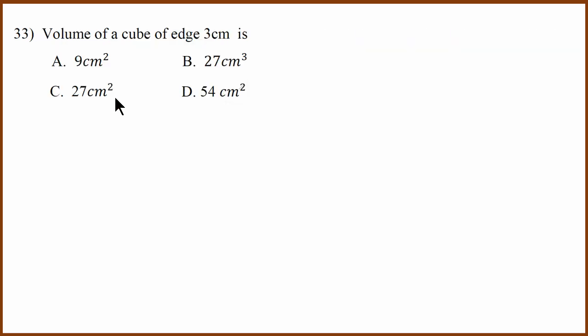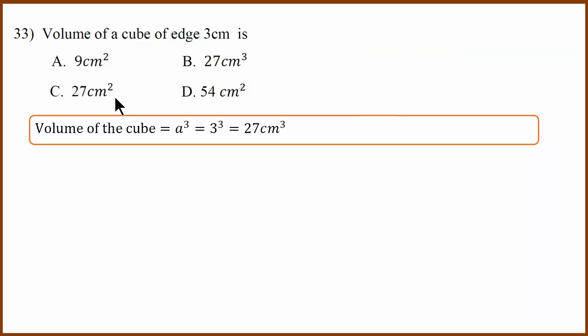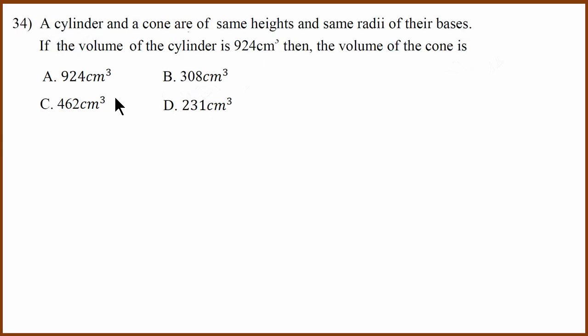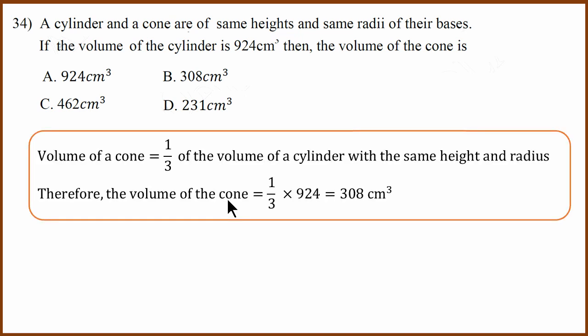Thirty-third question: volume of a cube formula is A cubed, where A is the side. If the side is 3 centimeters, the volume is 3 cubed, which is 27 cubic centimeters. Answer B. Thirty-fourth question: a cylinder and cone have the same height and same radii. If the volume of the cylinder is 924 cubic centimeters, the volume of the cone is 924 divided by 3, which is 308. Answer A.